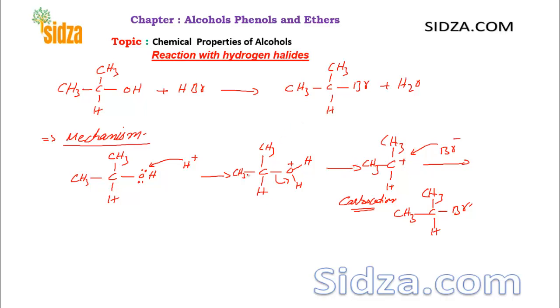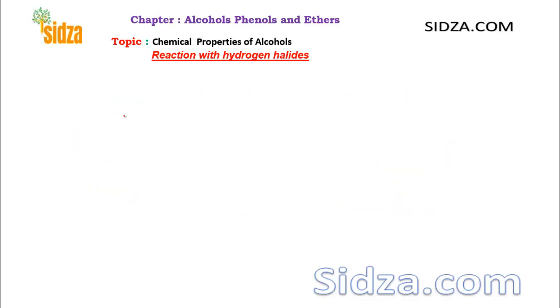Carbocations can undergo rearrangement, so in some cases you may get more than one product. Let's take an example.